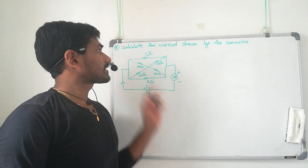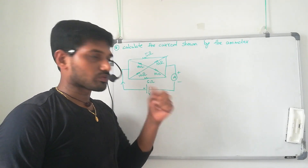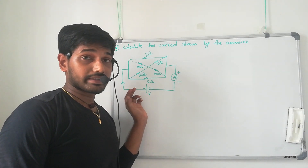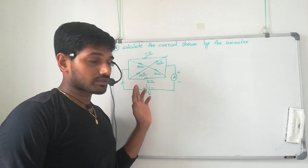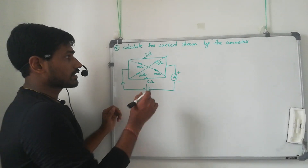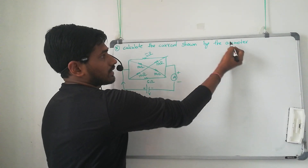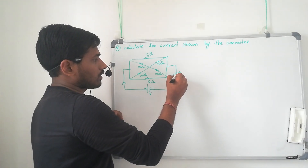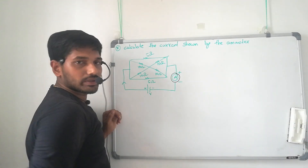Now we are going to discuss current diversity application number 2. This is another model, different from what we discussed previously. Here we need to calculate the current shown in the ammeter — how much current is drawn in the ammeter, we have to calculate.